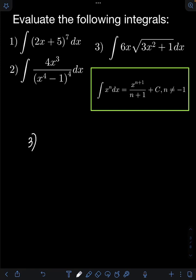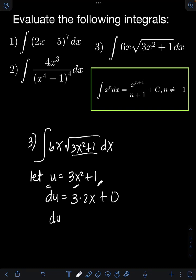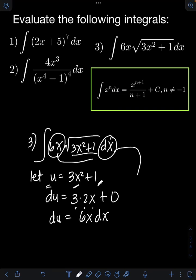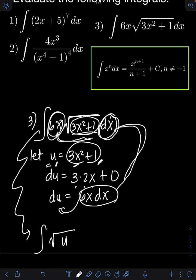For number 3, we have the integral of 6x times the square root of 3x squared plus 1, dx. Again, let's apply u substitution. Let u be equal to 3x squared plus 1. Get the derivative of both sides: derivative of u is du. Derivative of 3x squared is 3 times 2x, which is 6x, plus derivative of 1 which is 0. So du equals 6x dx. We have created the 6x dx term, which equals du.